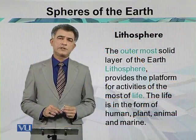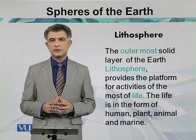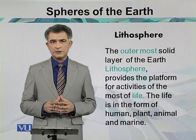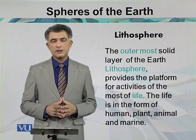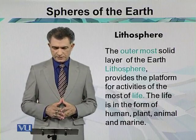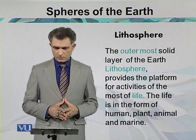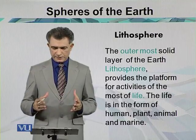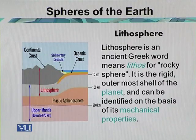The Lithosphere is the outermost part of the planet, also called the solid crust. It comes from the Greek word 'lithos.' It provides the platform for activities of most life forms — including human, plant, animal, and marine life. It is a rigid outermost area of the planet and can be identified on the basis of its mechanical properties.